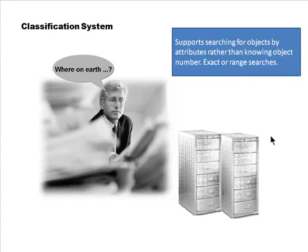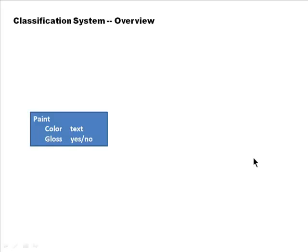The classification system supports searching for objects by attributes rather than by knowing the object number. The central concept is the class. For example, there is a class called 'paint' with two characteristics: color (a textual attribute — red, green, blue, yellow, orange, etc.) and gloss (a boolean yes/no field). Red glossy would be color=red, gloss=yes.